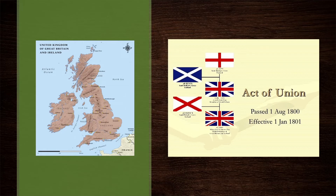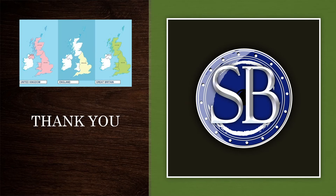In contemporary usage, Great Britain — while synonymous with the island of Britain and capable of being used to refer politically to England, Scotland, and Wales in combination — is sometimes used as a loose synonym for the United Kingdom as a whole. That's where this confusion comes from; it's because of the union and this contemporary usage that Great Britain and the United Kingdom became interchangeable. But as shown, that was not originally the case.